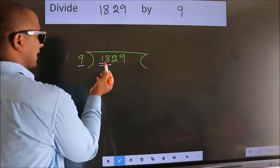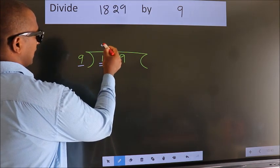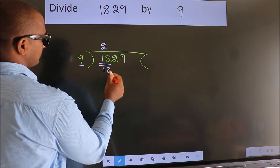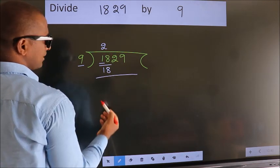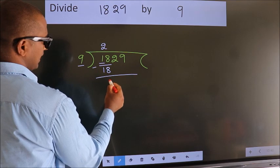When do we get 18 in the 9 table? 9 times 2 is 18. Now we should subtract. We get 0.